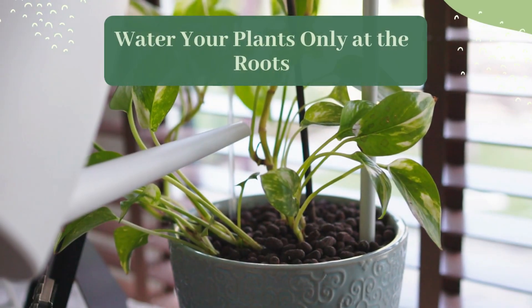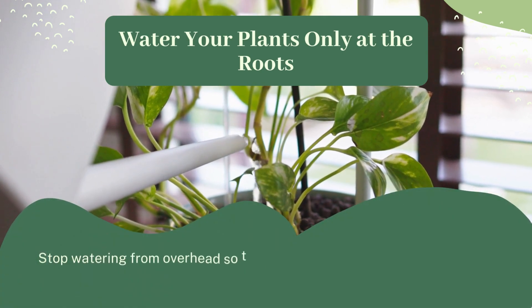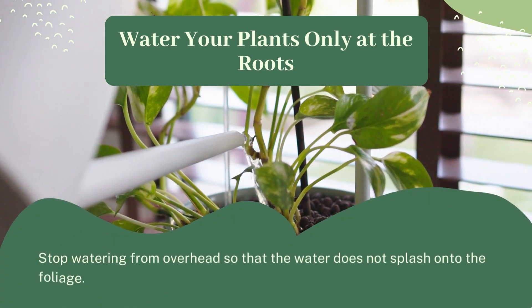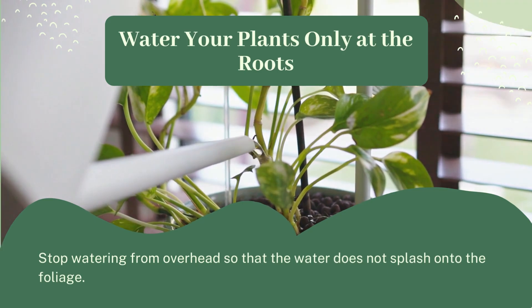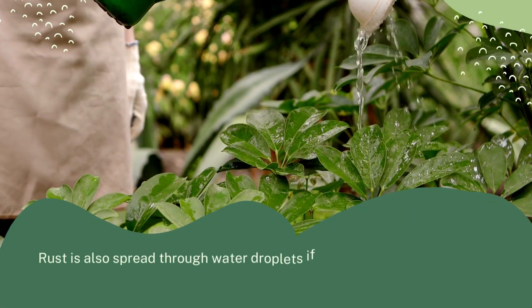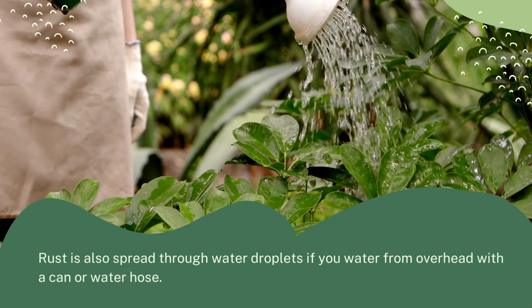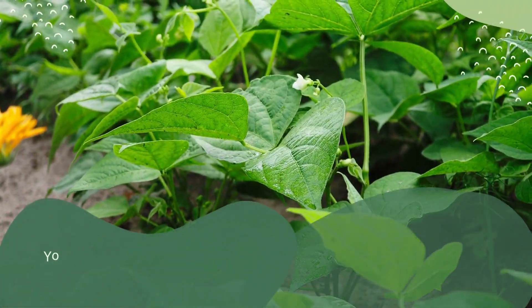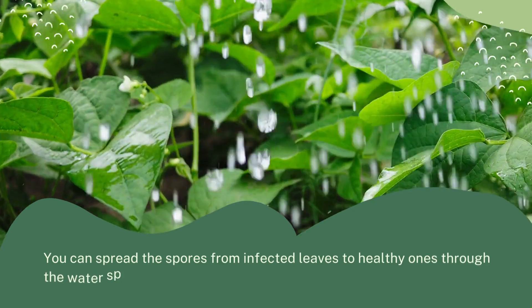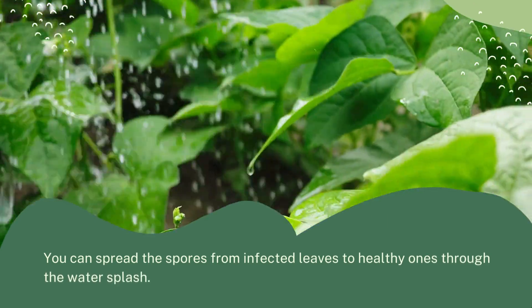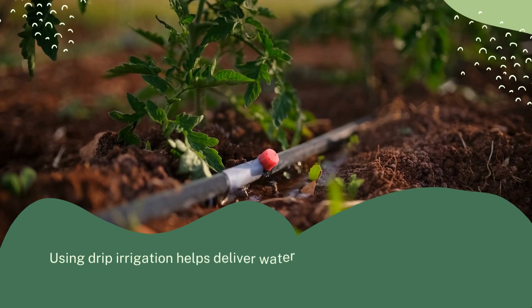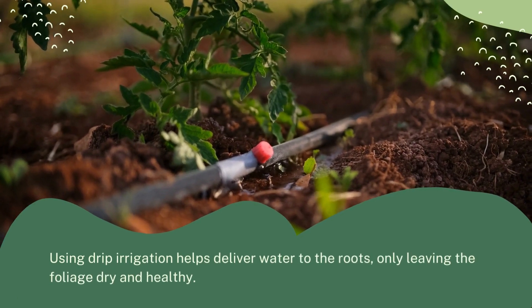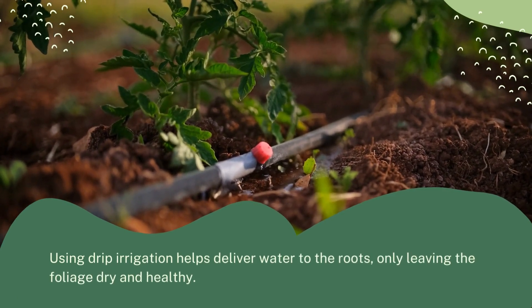Water your plants only at the roots. Stop watering from overhead so that the water does not splash onto the foliage. Rust is also spread through water droplets if you water from overhead with a can or water hose. You can spread the spores from infected leaves to healthy ones through the water splash. Using drip irrigation helps deliver water to the roots, only leaving the foliage dry and healthy.